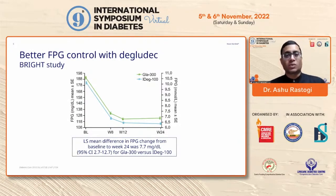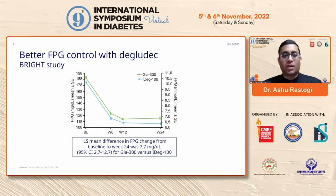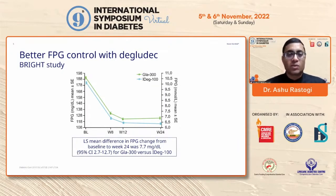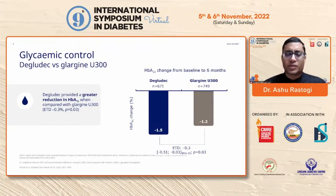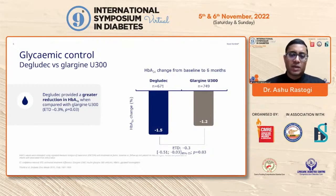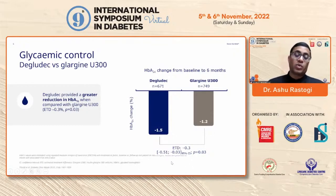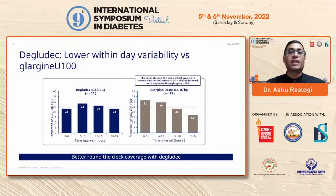There have been many studies comparing insulin degludec with glargine U100 and glargine U300. In the BRIGHT study comparing degludec with glargine U300, there was better fasting plasma glucose control with degludec — a difference of around 7 mg/dL, which was statistically significant. Degludec also provided a greater reduction in HbA1c compared to U300 over a follow-up period of six months — around a further 1.5% reduction, with an expected treatment difference of 0.3% and a confidence interval of 0.51 to 0.03, which was quite significant.